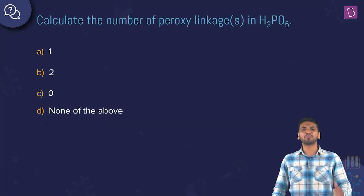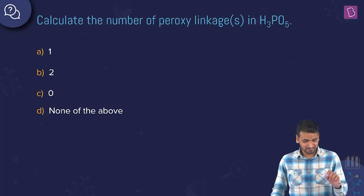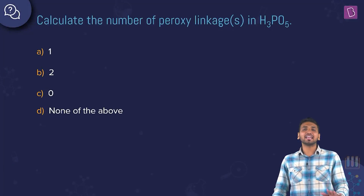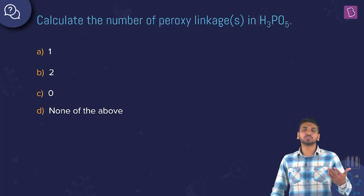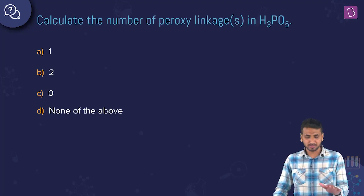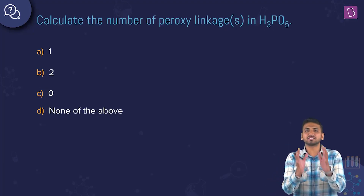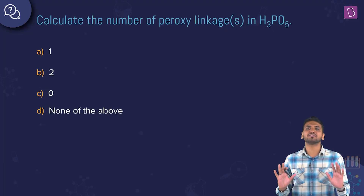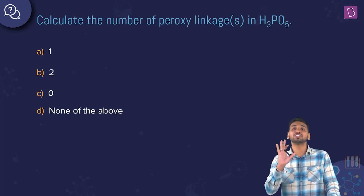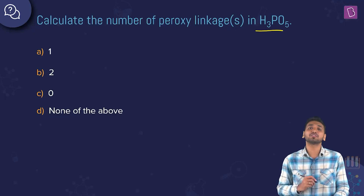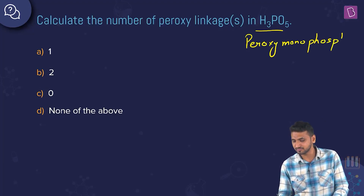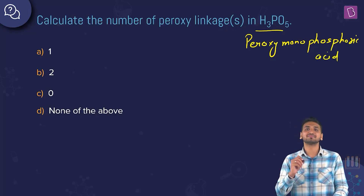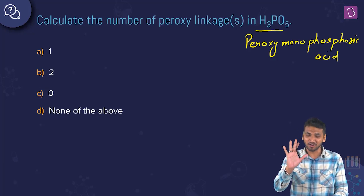Here we have a question on peroxy linkages. Calculate the number of peroxy linkages in H₃PO₅. The options are one, two, zero, and none of the above. There is a cheat code: the name of H₃PO₅ is peroxy monophosphoric acid, so you can guess the right answer from the name itself.